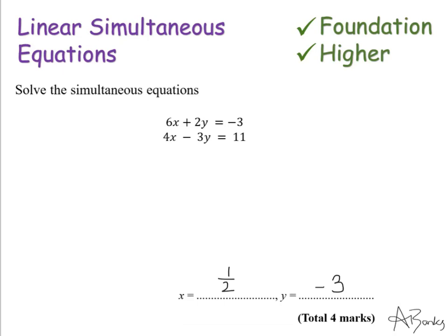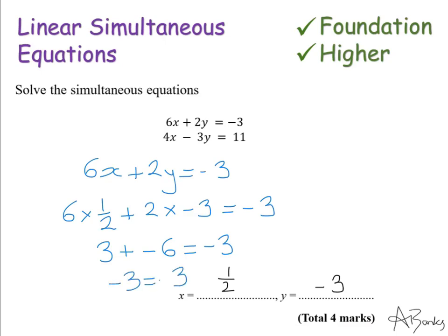I have 6x plus 2y equals minus 3. Well that's 6 lots of a half add 2 lots of minus 3 equals minus 3. 6 lots of a half is 3. Add 2 lots of minus 3 is minus 6. And yes that does work. Because 3 add minus 6 is minus 3. So my equation is correct. And I know I've banked my 4 marks.